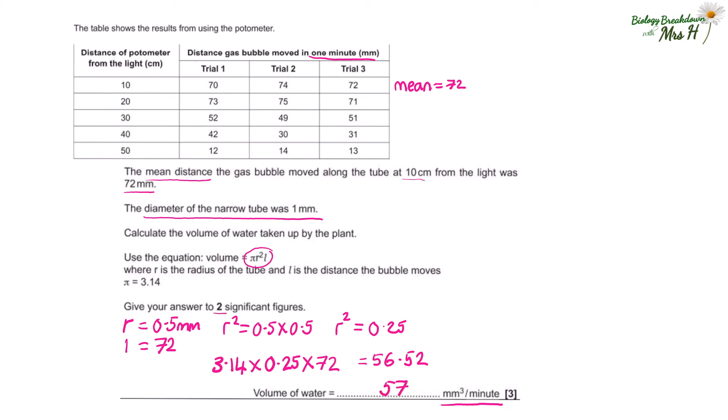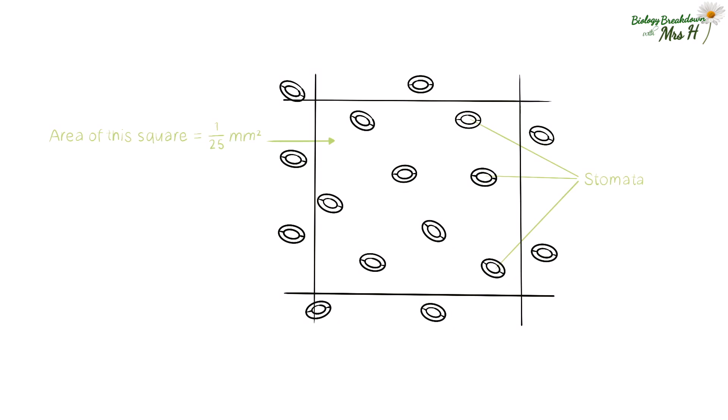Let's just quickly do another maths type question. You can have a look here, lots of stomata. How many stomata are there in one millimeter squared? We can see that there are eight in one twenty-fifth of a millimeter squared, so we need to multiply 8 by 25 to make that into a whole millimeter squared. So 8 times 25 is 200.